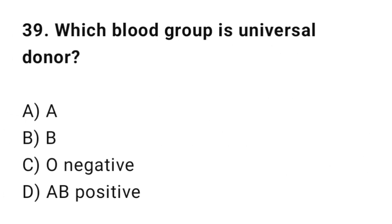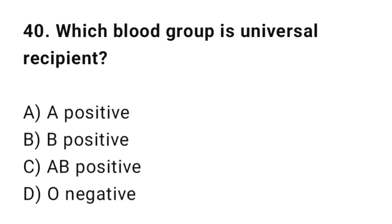Question 39: Which blood group is the universal donor? The correct option is C: O negative. Question 40: Which blood group is the universal recipient? The correct option is C: AB positive.